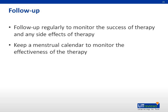The goal of management for DUB is to treat any acute bleeding and prevent the recurrence of bleeding. Patients should be followed up regularly to monitor the success of the therapy and for side effects of the medical or surgical therapy. Patients can keep a menstrual calendar to determine the success of the therapy.